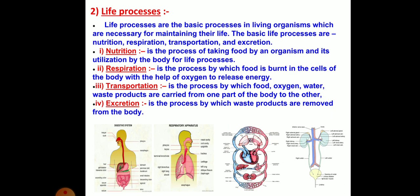Transportation: each food molecule or blood should be passed from one part of our body to others. In the lungs, blood gets oxygenated, then it passes to all parts of the body, and deoxygenated blood returns to the lungs for oxygenation — this work is done by the transportation process. So nutrition, respiration, transportation and excretion are the basic processes in living organisms, very necessary for maintaining their lives.